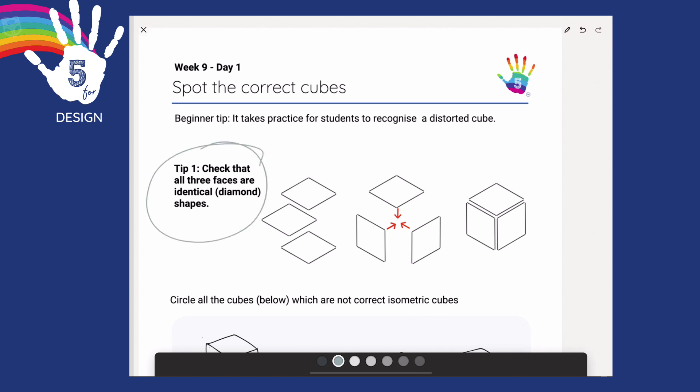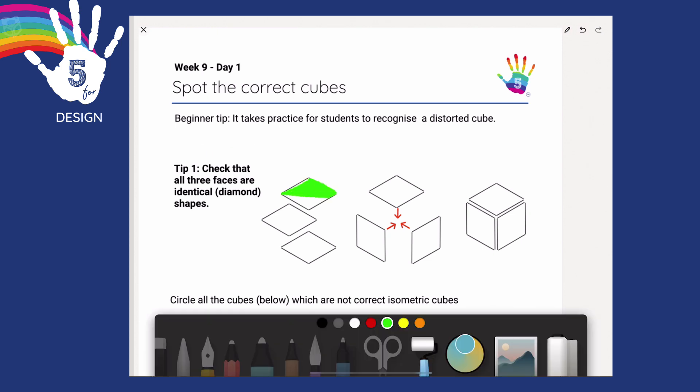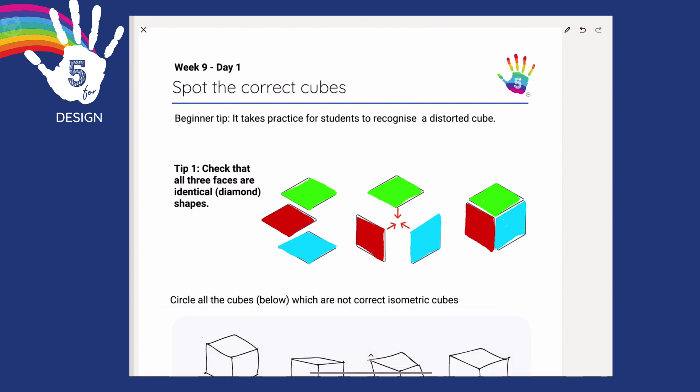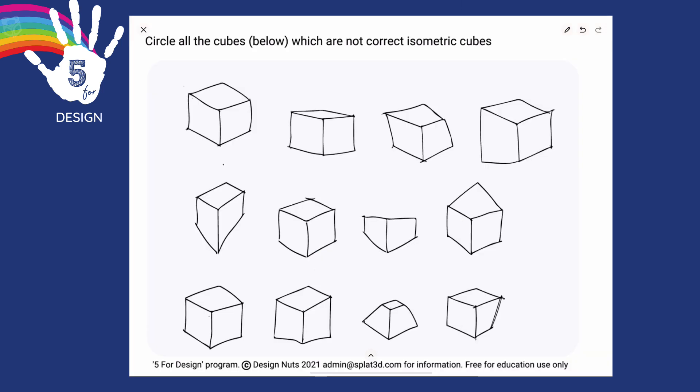Tip one, check that all three faces are identical or the same diamond shapes. Here's one diamond, two, three. Notice they're all exactly the same shape. It's just that I've rotated them around into these positions and bring them together and boom, you've got an isometric cube. My first tip is to look and see if all of the three faces are the same diamond shape. Your task today is to find and circle all of the cubes that you think are not drawn correctly.